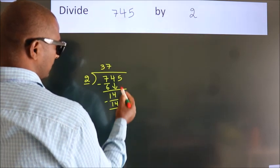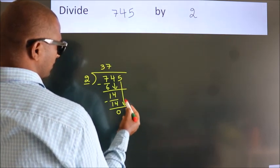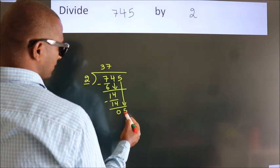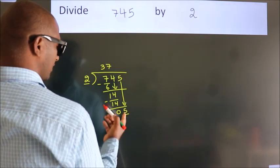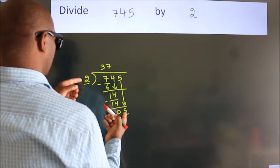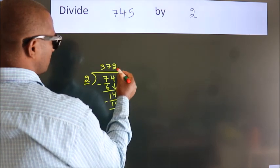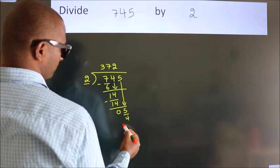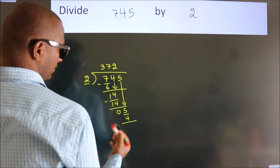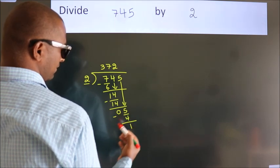After this, bring down the beside number. So 5 down, making 5. A number close to 5 in the 2 table is 2 twos, 4. Now we subtract, we get 1.